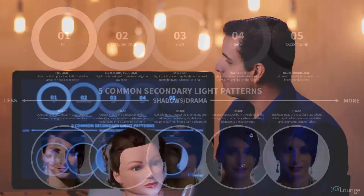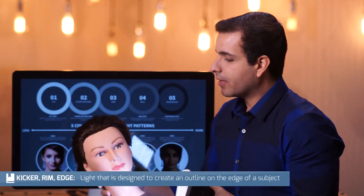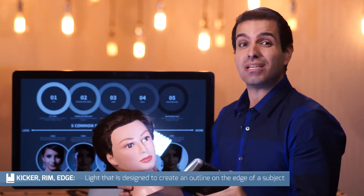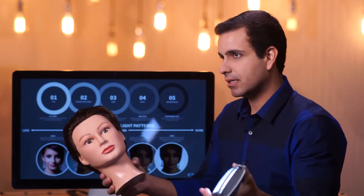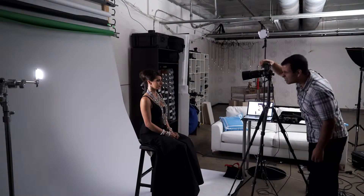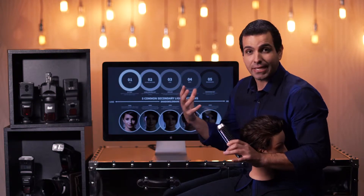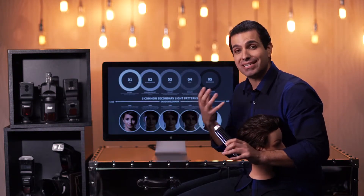Now going into the second one — we have a rim, a kicker, or an edge light. It's actually three different words for the exact same thing. A kicker simply comes onto your subject from an angle and from the back, and it creates that rim or edge light. You can see in our example of Olivia — it just comes and gives the back of the face a little kiss, hitting the neck and shoulders and creating that edge light. This is a great light for creating dimension to the face. For dramatic athletic portraits or any dramatic shot, a kicker is absolutely fantastic — it adds a lot of dimension and depth to the face.